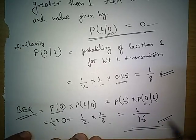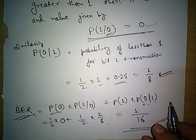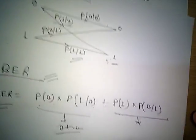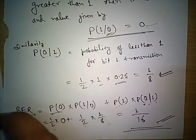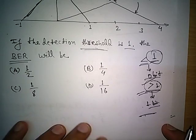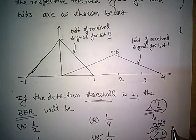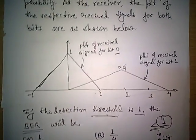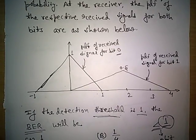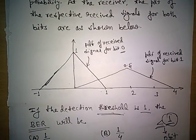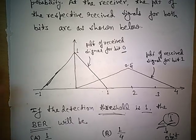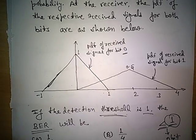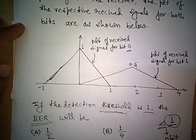The final bit error rate is 1/16, so option D is the correct answer. In this way we can solve questions on bit error rate. Hopefully I will come with some other videos on other concepts in upcoming videos. Thank you so much for watching.